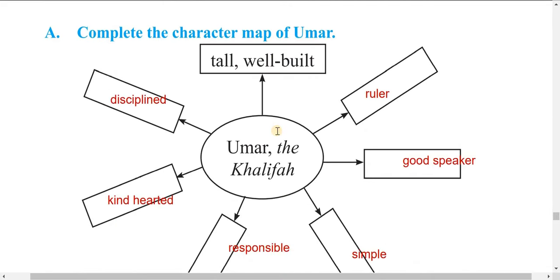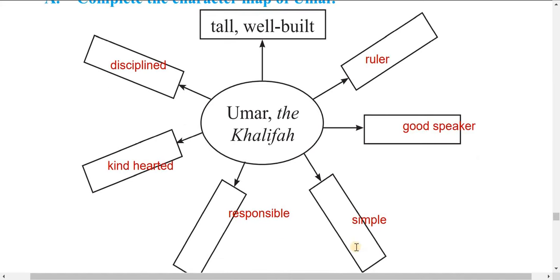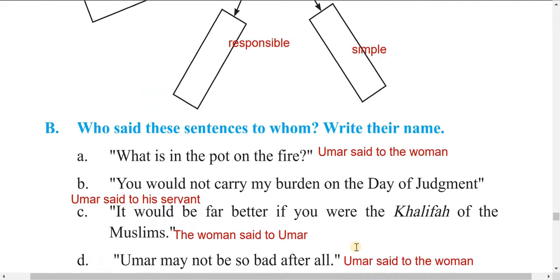Now complete the character map of Omar. One description is already given: Omar the Caliph was tall and well-built. You can find other adjectives to describe him: disciplined, good speaker, kind-hearted, responsible, simple — you can find these words in the text above.